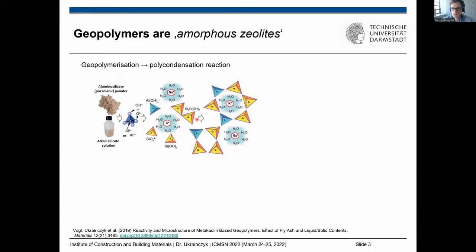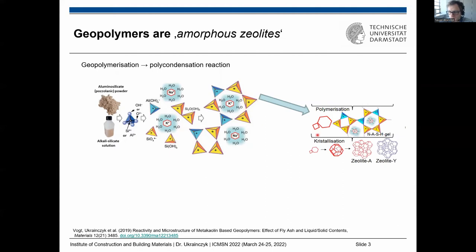I will explain why geopolymers are essentially amorphous zeolites. You are likely familiar with zeolites: we have silicate and aluminate tetrahedra that polycondensate, merging with oxo bridges. At the end we get amorphous zeolites. If we were to crystallize the geopolymers further, we would get crystal structures — that is, actual zeolites. In their amorphous state, geopolymers have some short-range crystalline structure but lack long-range crystalline order.